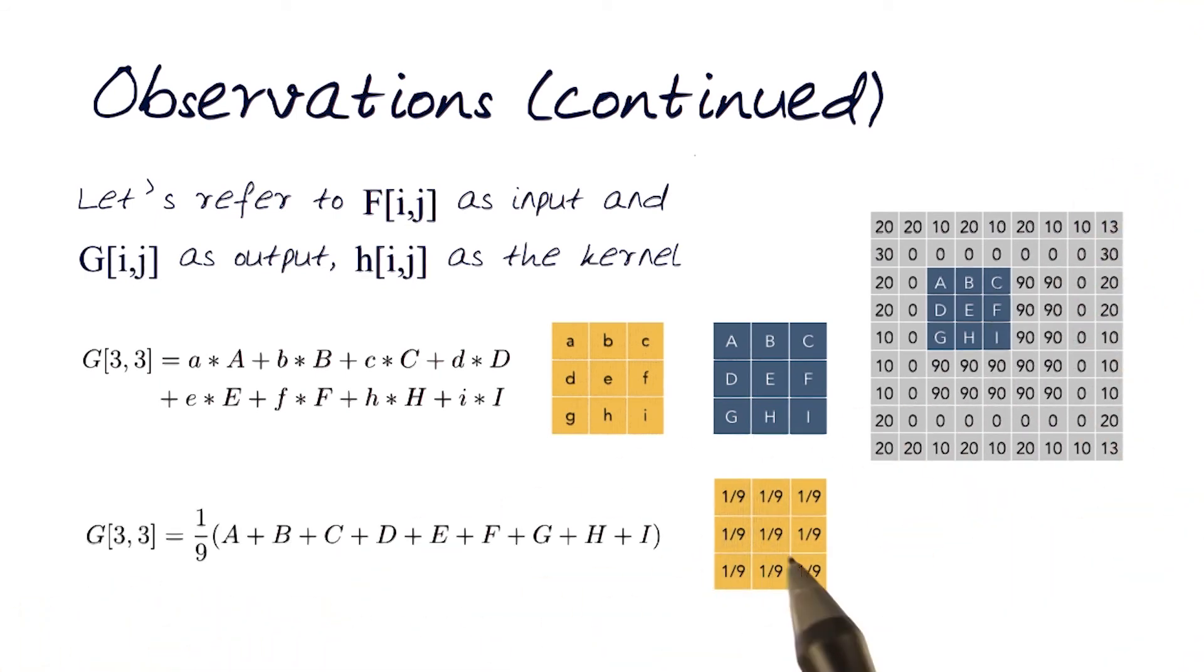So g[3,3], basically for a kernel which is an average kernel, 1 over 9, all the 9 elements would be 1 over 9, and the summation of all of them. Very similar to what we had looked at in the 1D case, now applied to a 2D case here.